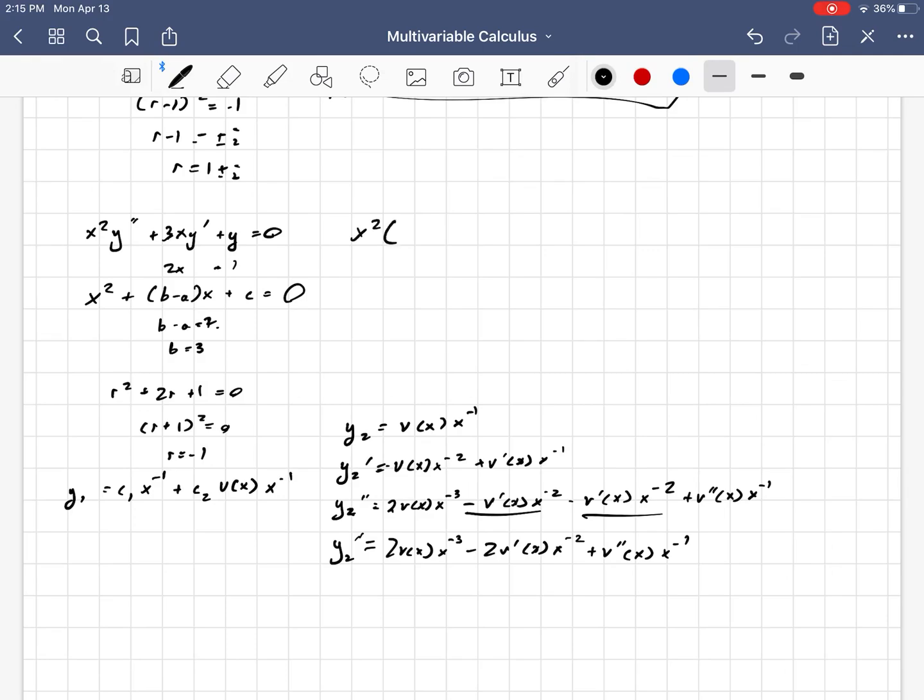Now, we plug this into our original differential equation. Here's where the algebra gets ugly. We get x² times all of y double prime. That's 2vx⁻³ - 2v'x⁻² + v''x⁻¹. Now we do plus 3x times -vx⁻² + v'x⁻¹.